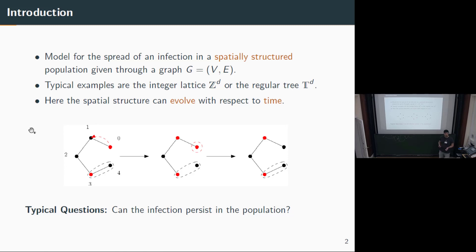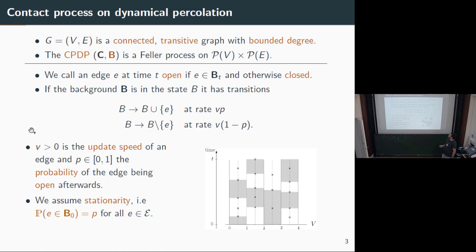In infinite graphs, one of the first questions you can ask is: can this infection persist for all time? This is certainly not true in finite graphs, since we have a Markov model on a finite state space that will end up in its absorbing state. Let us introduce the contact process on dynamical percolation. Consider a graph G which is connected, transitive, and locally finite. The contact process on top of a dynamic percolation is this pair of processes (C, B).